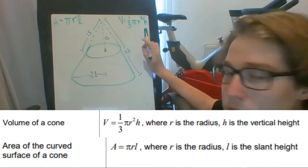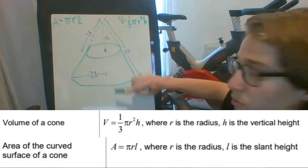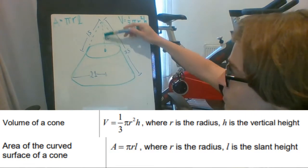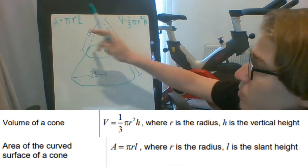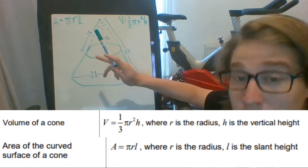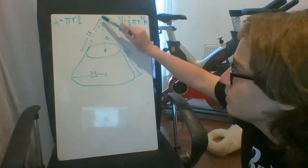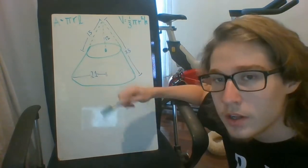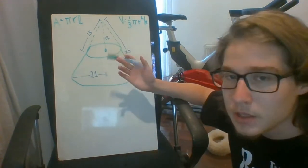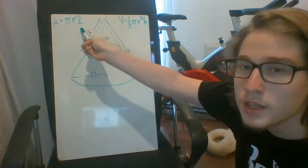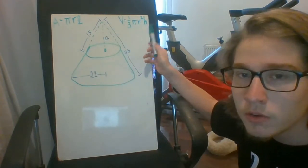The height for the volume is going to be the vertical height, so for example this 12 right here. And for the surface area it's going to be the slant height, which is through the side, which in this scenario would be the 15 right there. This problem doesn't have volumes but I still wanted to point it out because it's a classic mistake. This L is slant height and this one is for vertical height.